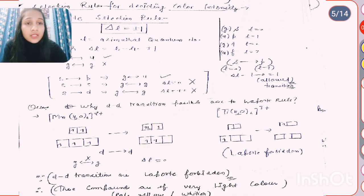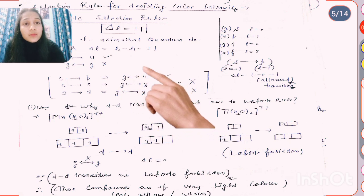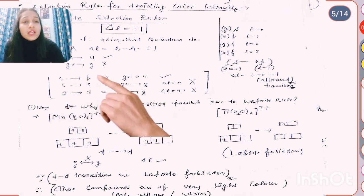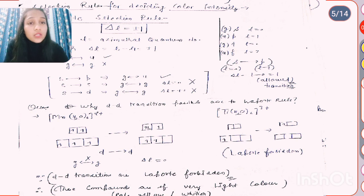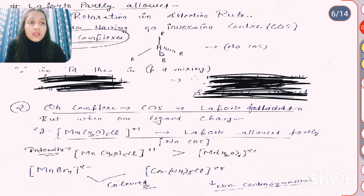Transition from D to D means g to g — g (gerade) has a center of symmetry and u (ungerade) does not. S orbitals have a center of symmetry; P and D do not have center of symmetry — wait, D has center of symmetry, so it is gerade. A g to g transition is forbidden and delta L is also 0, so it is Laporte forbidden. All D-D transitions are therefore Laporte forbidden, which is why such compounds appear pale yellow, whitish, or colorless.